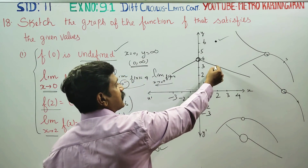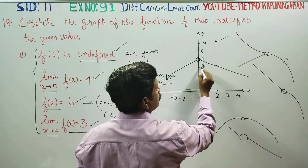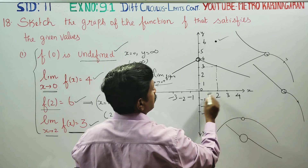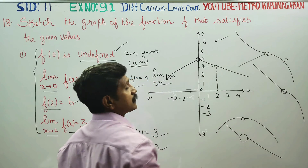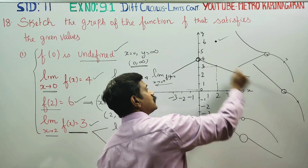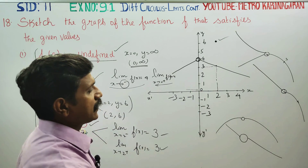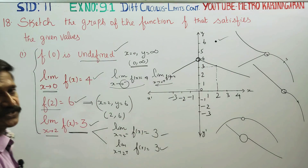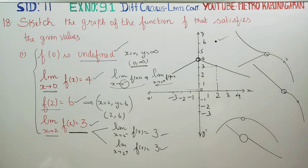If you touch the left-hand direction and right-hand direction, you need to meet through the graph — through the straight line or the curve line. This is the first subdivision in the 18th sum.